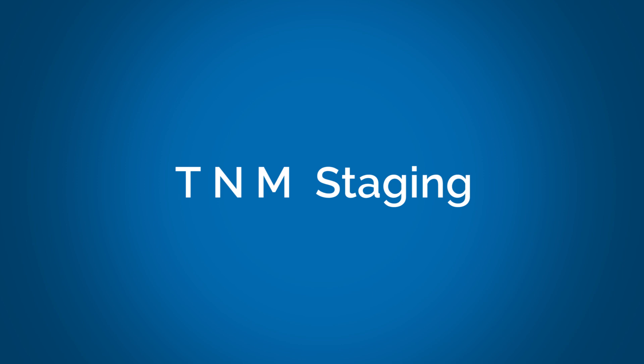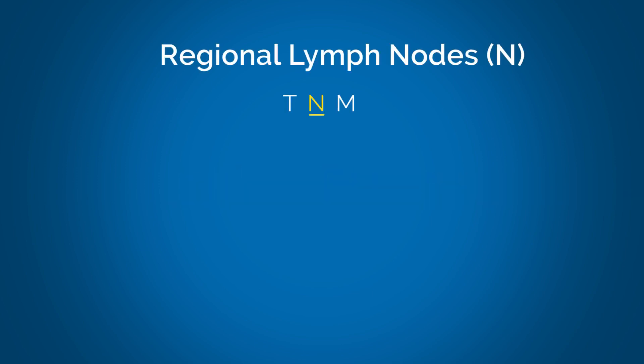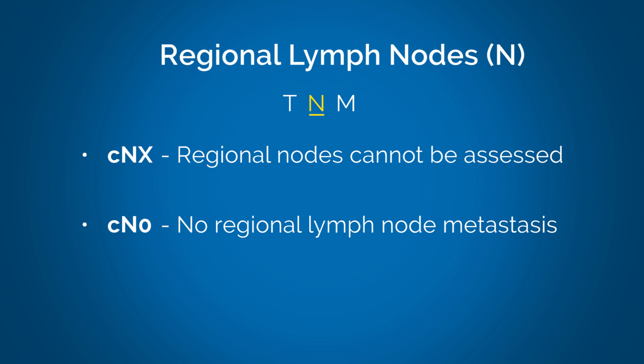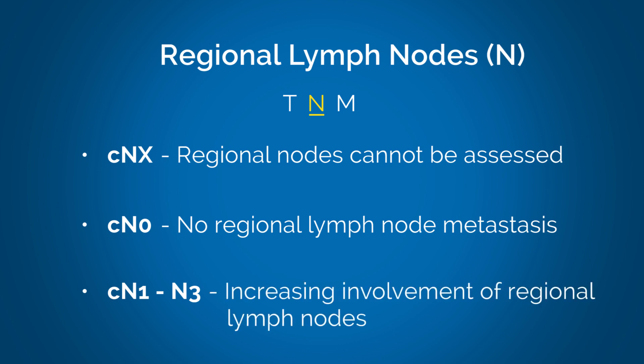Regional lymph nodes — N. When assigning a clinical classification to the regional lymph nodes, the following combination of letters and numbers is used: cNX means the regional lymph nodes cannot be assessed; cN0 means there is no regional lymph node metastases; and cN1 to N3 refers to the increasing involvement of regional lymph nodes.